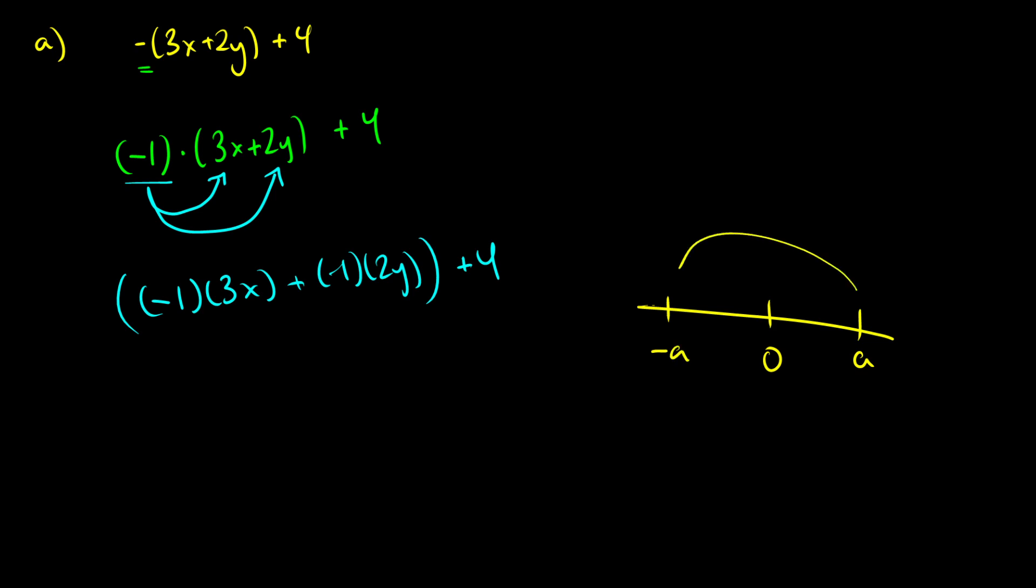So if we do negative one times 3x, what we get is negative 3x. When we do negative one times 2y, we get negative 2y.